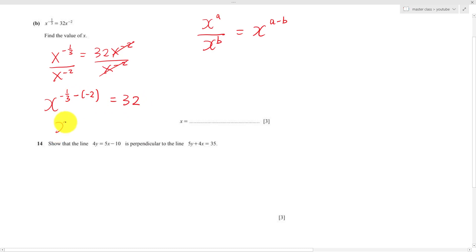Then this is plus 2. You can just add them together. This one will be 6 over 3. You minus this one, you get 5 over 3, equals to 32.